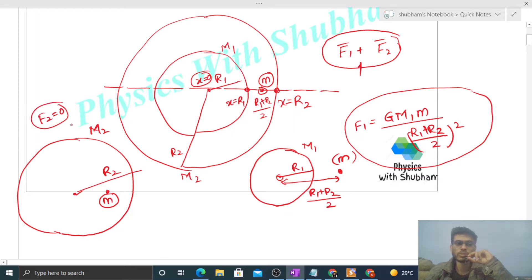So F2 will be zero. Why? Because the field inside the shell is zero. Why? Because of Gauss's law. We discussed in a previous video that the field inside a shell is zero.